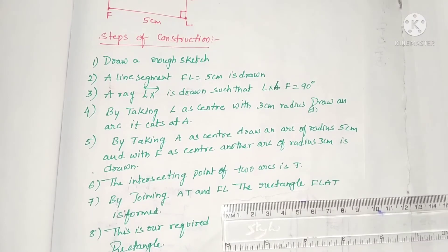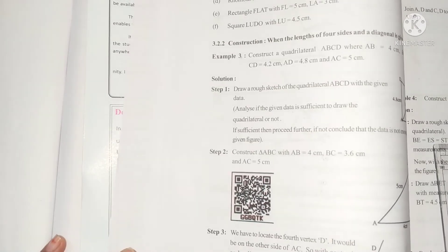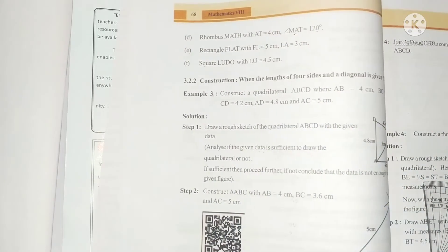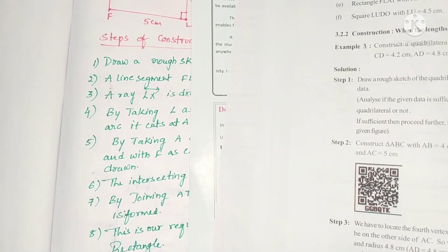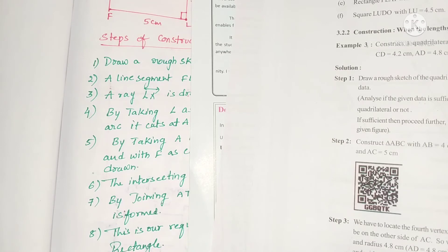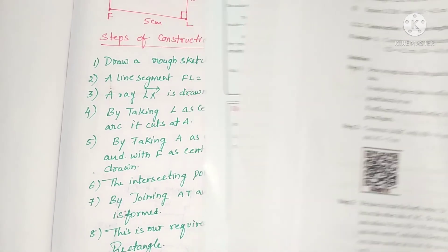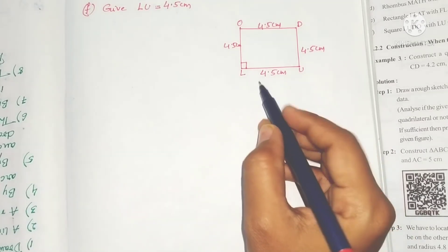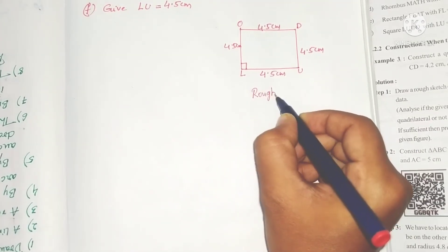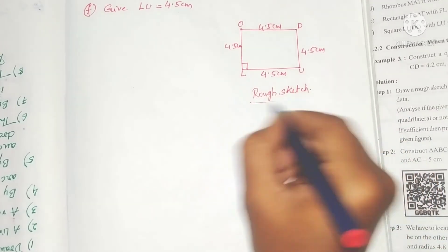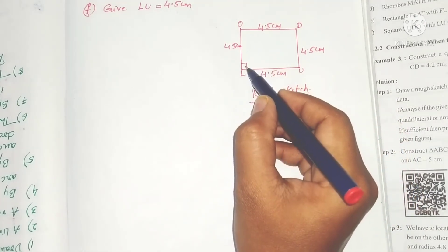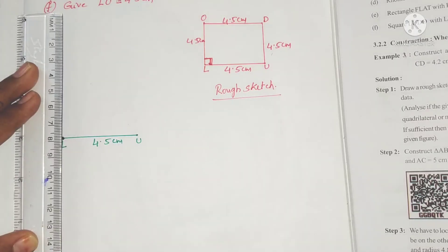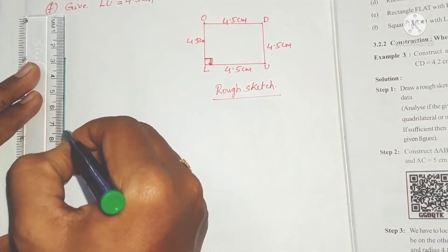The last problem is: construct square LUDO with LU equals 4.5 centimeters. In a square, all four sides are equal and all angles are right angles (90 degrees). A rough sketch is drawn showing all sides equal and each angle 90 degrees.